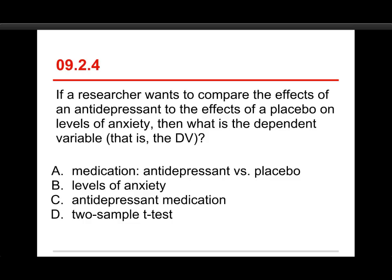Question four: if a researcher wants to compare the effects of an antidepressant to a placebo on levels of anxiety, what is the dependent variable? The answer is B — levels of anxiety, the outcome variable. Answer A, medication (antidepressant versus placebo), is the independent variable — the manipulated variable expected to produce the difference. Answer C, antidepressant medication, is just one level within the independent variable. Answer D, two-sample t-test, is simply the inferential test used in this case.